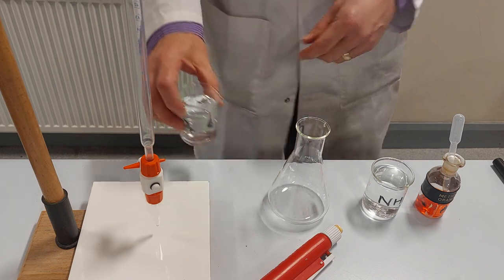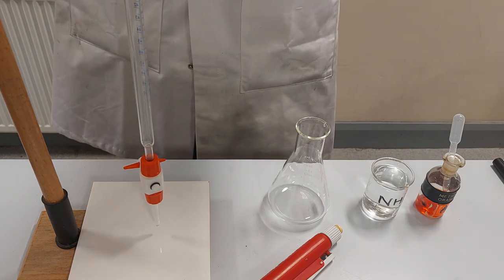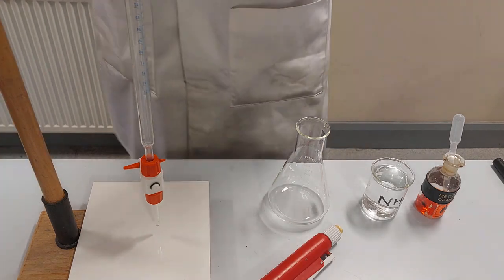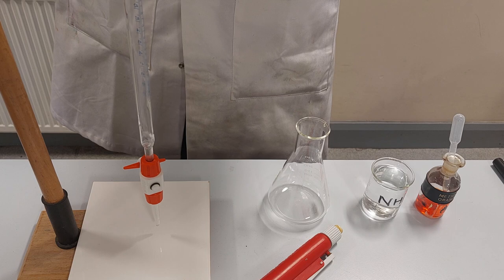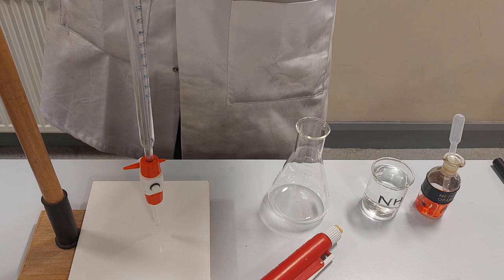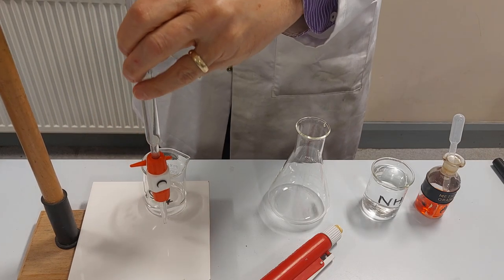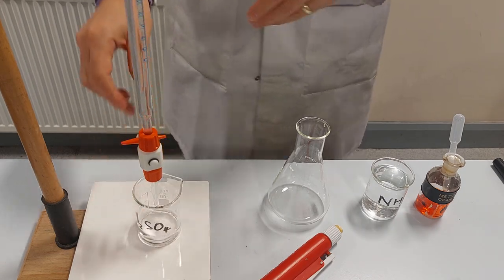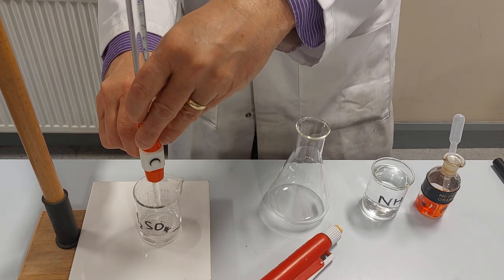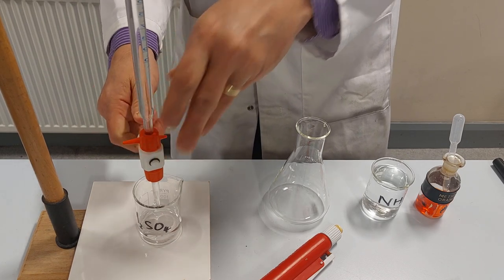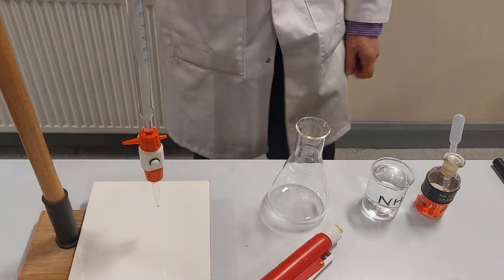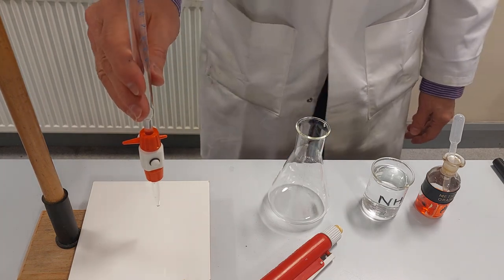I'm going to put the sulfuric acid first of all in this tall piece of apparatus here which is called a burette. I'm going to fill that right to the top, and then I'm going to run a bit through this jet here knocking out any air bubbles that appear, and then that's just going to be sitting right on zero on the scale at the top there. So that's my burette full of acid all ready to go.